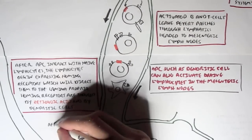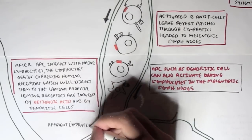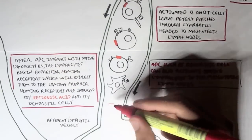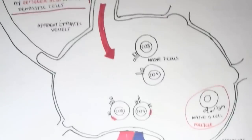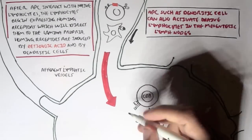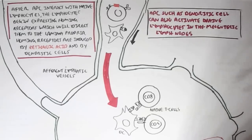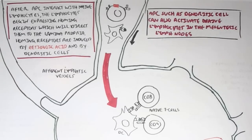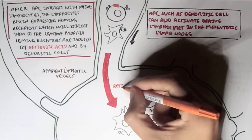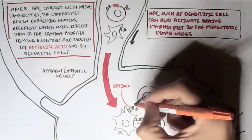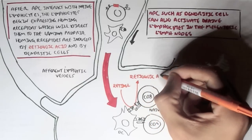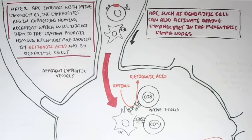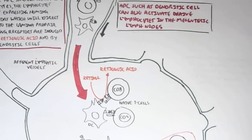Dendritic cells can activate naive lymphocytes within the Peyer's patches, or they can activate lymphocytes within the mesenteric lymph nodes. So if the dendritic cell were to enter the mesenteric lymph nodes via the afferent lymphatic vessel, it will activate the naive CD8 and naive CD4 T cells here and convert retinol to retinoic acid in the process.